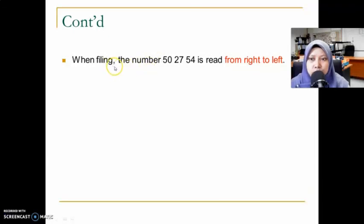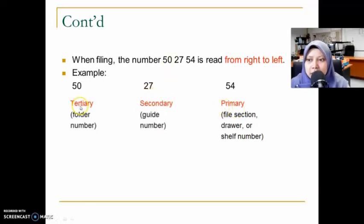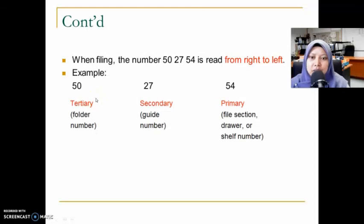For another example: filing the number 50-27-54 using the terminal digit method. Reading from right to left: 54 is the primary number (shelf number), 27 is the secondary number (guide number), and 50 is the tertiary number (folder number). So the file is located at shelf 54, guide 27, folder 50. Next, we will continue with the middle digit method.